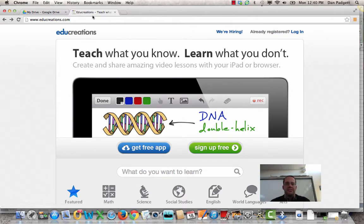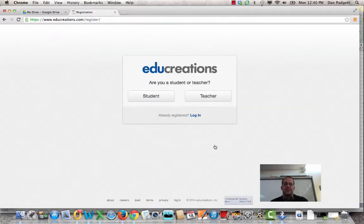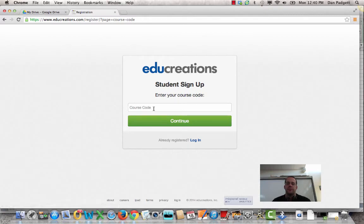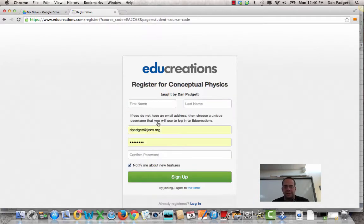It is called EduCreations. You're going to go to www.educreations.com. You will sign up for free and this link will also be in an email that I send you through your ljcds.org email account. So we are going to register as a student. You do have a course code and this will be in the email as well. That course code is EA2C68. Press continue.